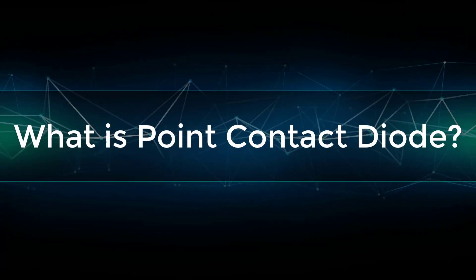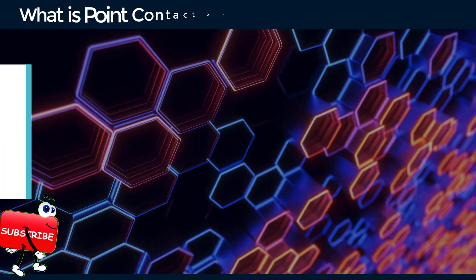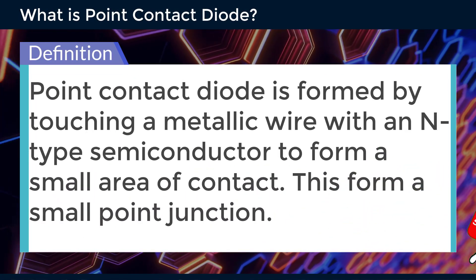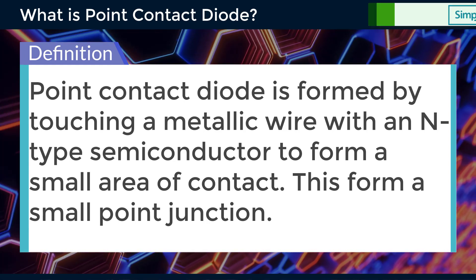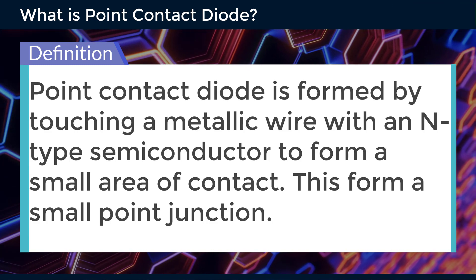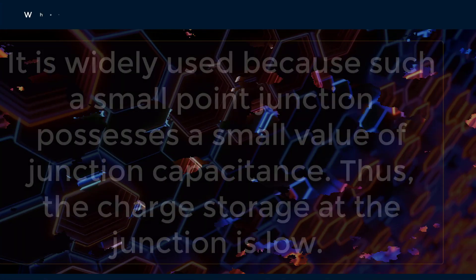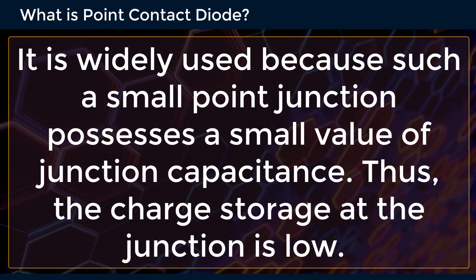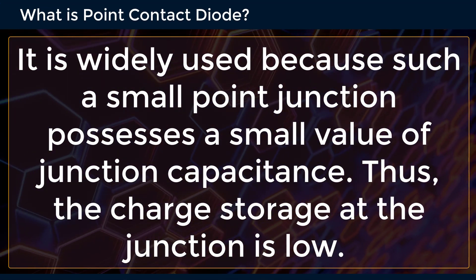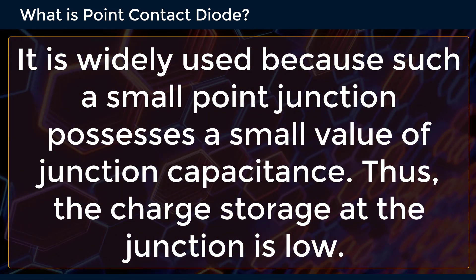What is Point Contact Diode? A point contact diode is formed by touching a metallic wire with an n-type semiconductor to form a small area of contact, creating a small point junction. It is widely used because such a small point junction possesses a small value of junction capacitance. Thus, the charge storage at the junction is low.